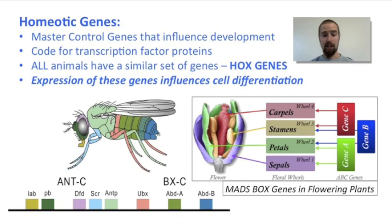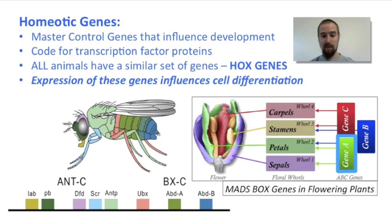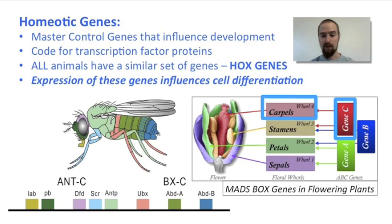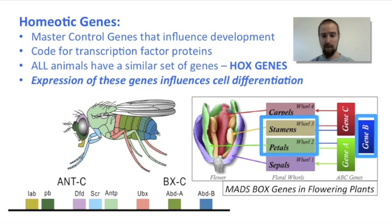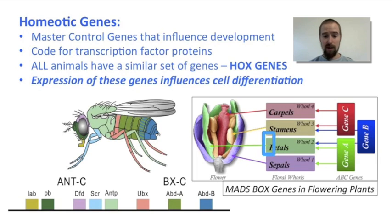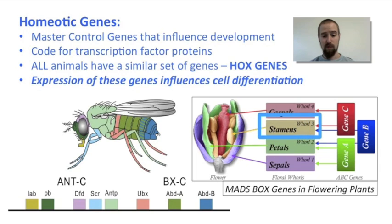Plants also have homeotic genes, but not hox genes specifically. In flowering plants, for example, a set of homeotic genes called the MADS-Box genes control floral development in much the same way that hox genes control the fruit fly's development. Cells that express only gene A are destined to become the sepals of the flower, while cells that express only gene C are destined to become carpals. Cells that express gene B can become either the stamens or the petals of the flower, but that depends on whether gene A or gene C is also expressed.